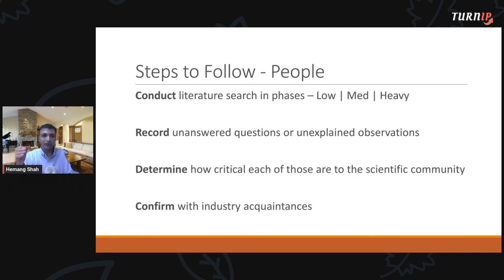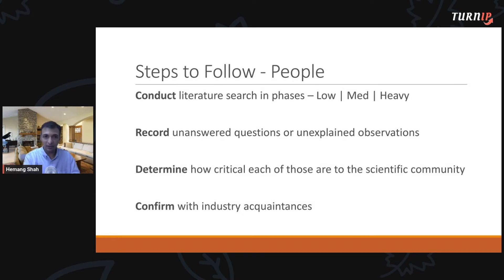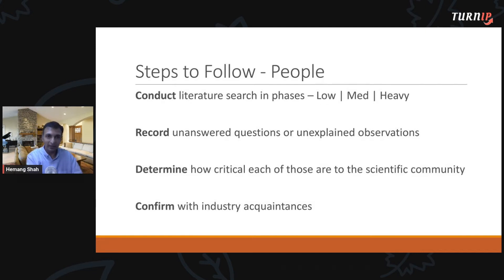In all these phases, what you're trying to do is step number two: record unanswered questions. Any time you see that something is not explained to your satisfaction, or people say 'we are observing this phenomena but don't fully understand it,' you record such observations because these are the areas to drill further into. These are questions worth answering — but are they really worth answering? That's where you try to determine how critical these are to the scientific community, because your primary goal for research is to advance the science.